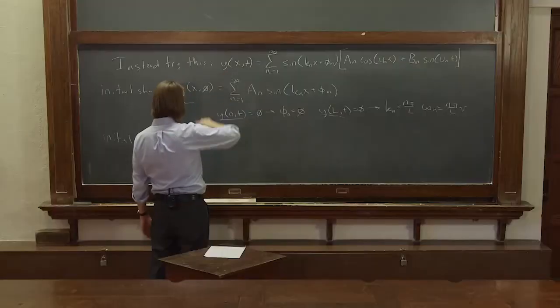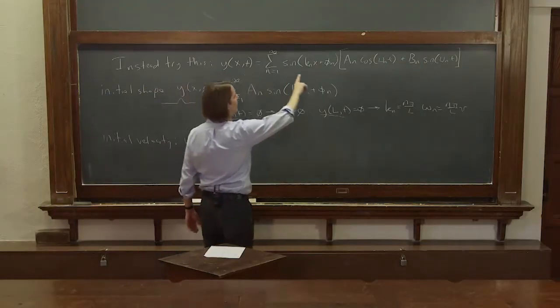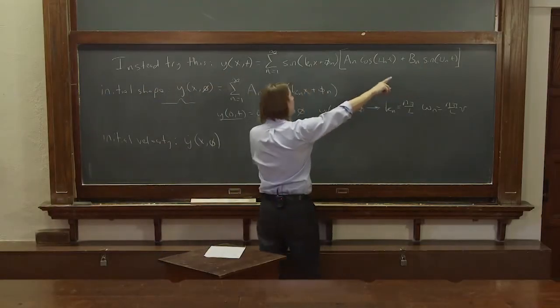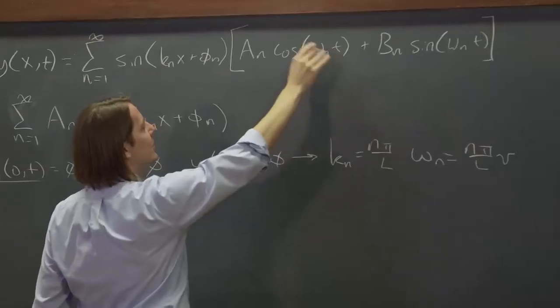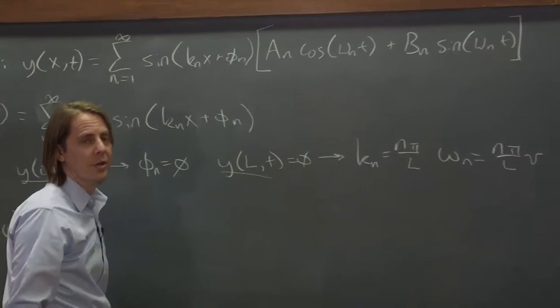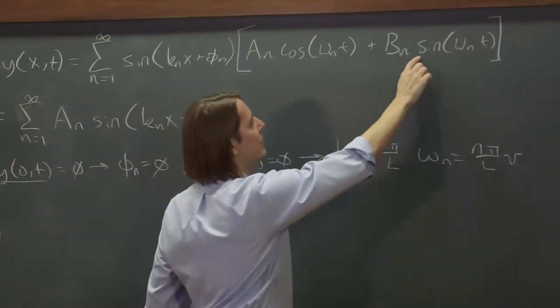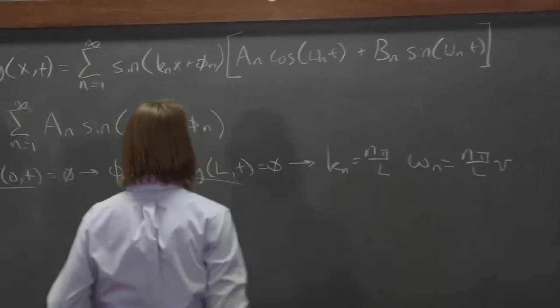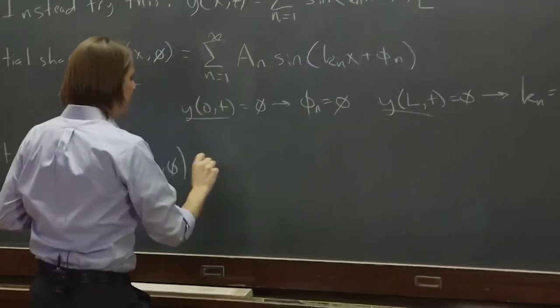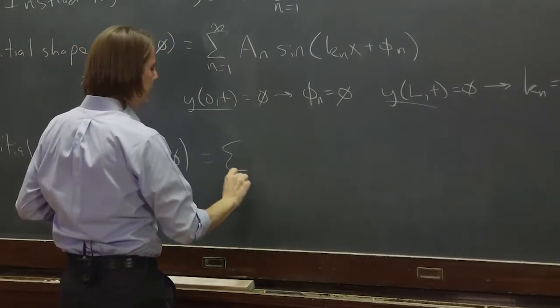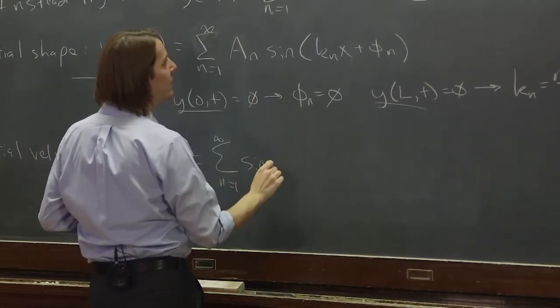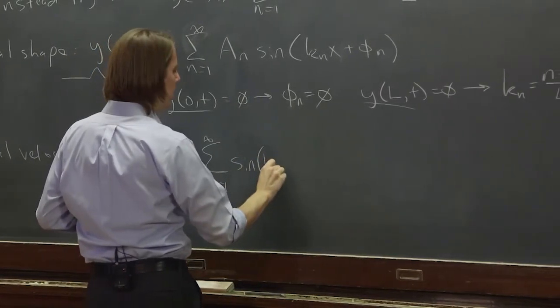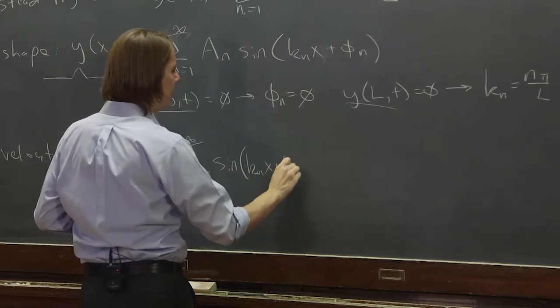That would be equal to, well, we take the derivative of this and set time equal to 0. The derivative of cosine is negative sin(ωt) and sin(ωt) is 0, so this makes the a_n's go away. The derivative of the sine is cosine, it pulls out an ω_n. So what we end up with is the sum of n=1 to infinity of sin(k_n x + φ_n).